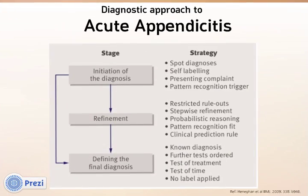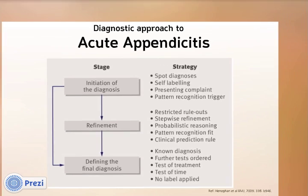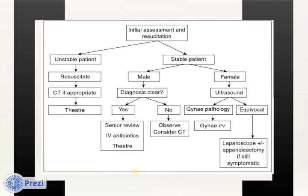Now for defining the final diagnosis, which is often at the time of surgery in the case of appendicitis. For unstable patients, it may be appropriate to do a CT and, if necessary, proceed to theatre. For stable patients, in males with a diagnostically clear picture, they may proceed directly to diagnostic laparoscopy. In females, ultrasound scan is almost always warranted to exclude gynaecological pathology.